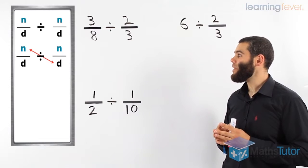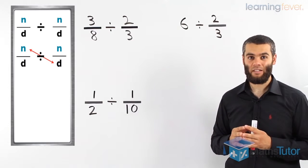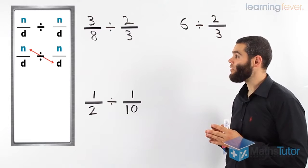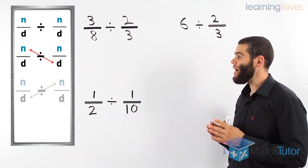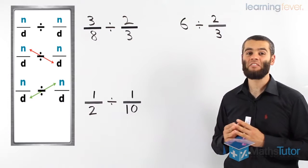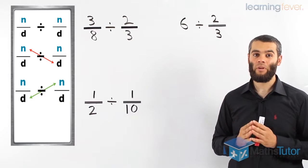The theory states that we have to actually multiply the numerator, or the first numerator, with the second denominator. And then, marked in green, we multiply the second numerator with the first denominator.